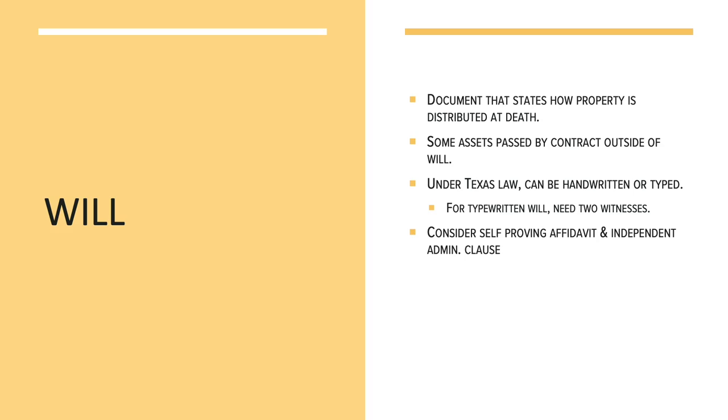You may also want to think about having an independent administration clause. When you go to probate a will, it's either going to be a dependent or an independent administration. An independent administration lets your executor, once appointed with letters testamentary, do what they need to do mostly without supervision from the court — they don't have to get approval every time they need to sell or deed something. A dependent administration requires everything to be approved by the court before they can act, which takes longer and costs more money. In general, you probably want an independent administration, unless you expect a knock-down, drag-out family fight and want your executor to be able to say the court has to approve everything first.